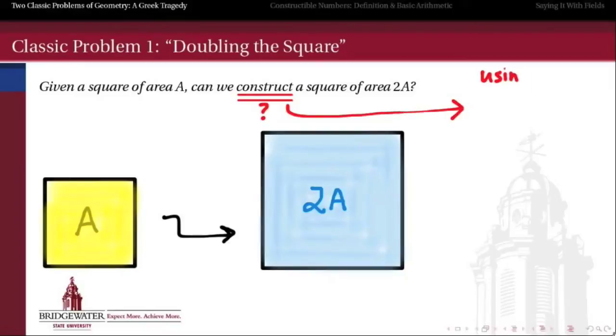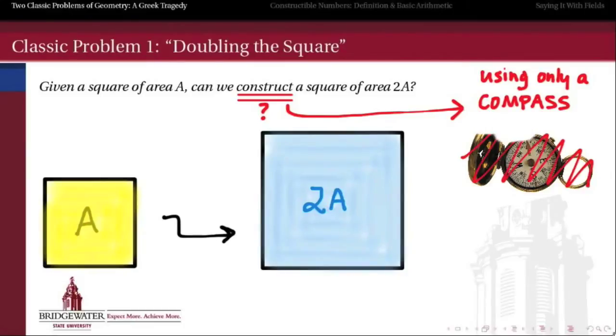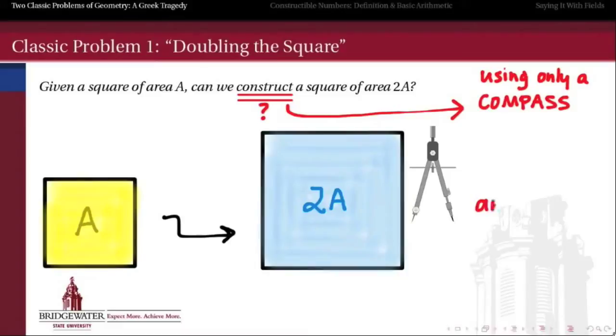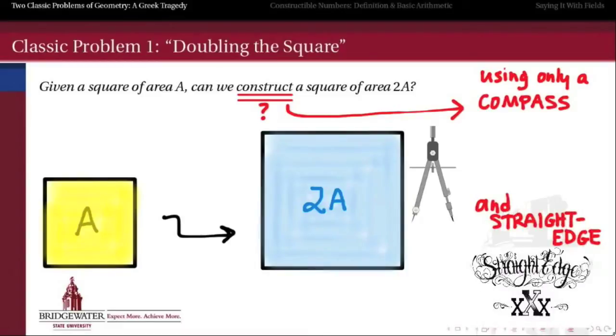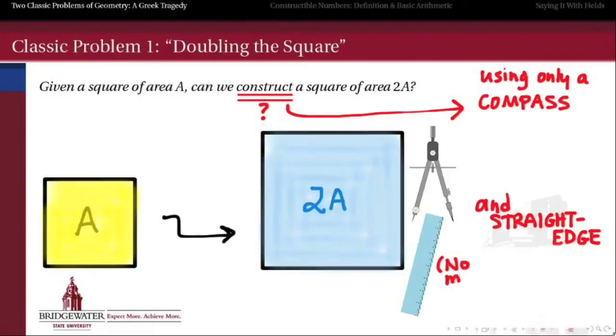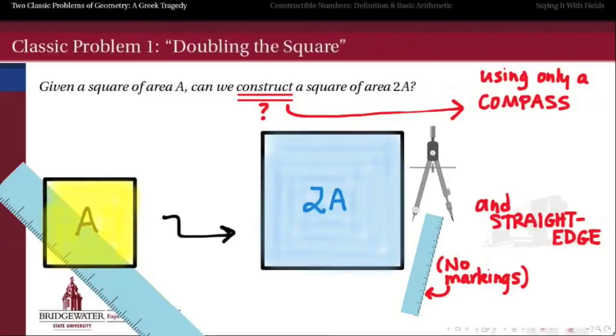And again, construct means that we should be able to do this using only a compass. No, not that kind of compass. I'm talking about the compass we use in high school geometry, one of these things. And a straightedge. And no, not that kind of straightedge. I'm talking about the kind of straightedge that is basically a ruler with no markings on it, which is infinitely long. So we can draw a straight line, but we can't necessarily measure that straight line using it.